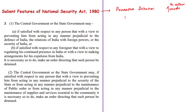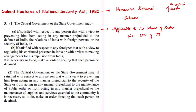This act applies to the whole of India. Earlier, this act was not applicable in the erstwhile state of Jammu and Kashmir, but the National Security Act was amended by the Jammu and Kashmir Reorganization Act of 2019. As a result, now this act is applicable to the whole of India including the union territory of Jammu and Kashmir and the union territory of Ladakh.